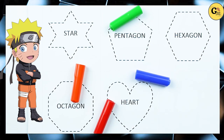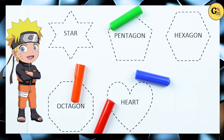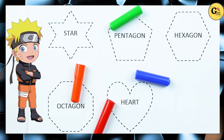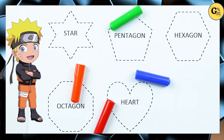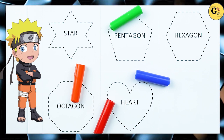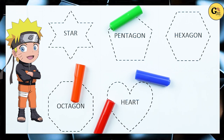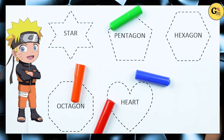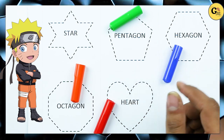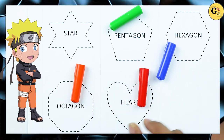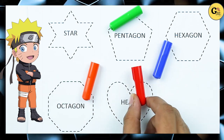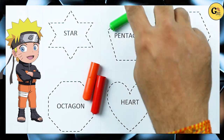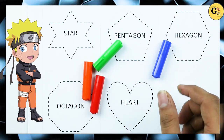Hello friends, today we learn shapes: star, pentagon, hexagon, octagon and heart with colors. Blue color, orange color, red color, green color.